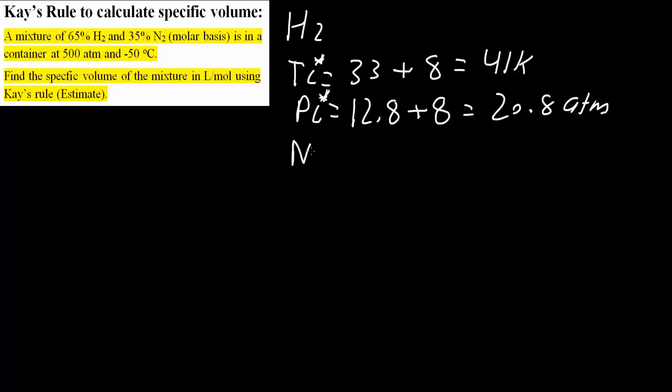Next, we will do nitrogen. For nitrogen, we find TC would equal 126.2 Kelvin. Again, this came from a table at the end of a textbook or through the internet. And we would get 33.5 atmospheric pressure.